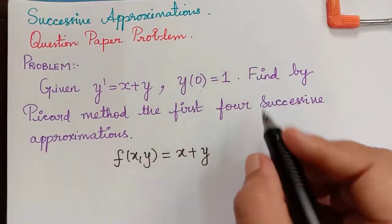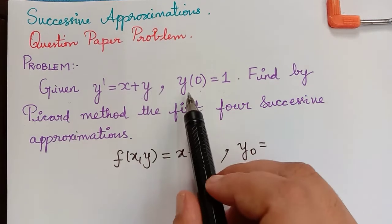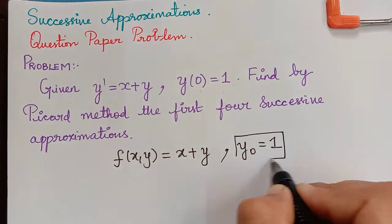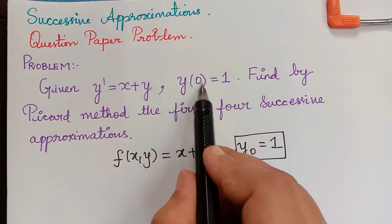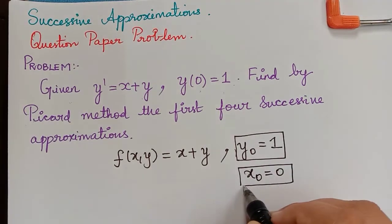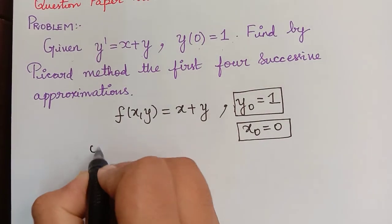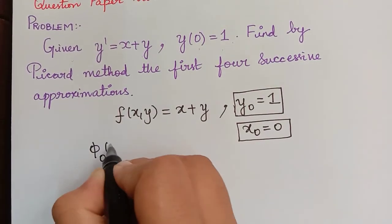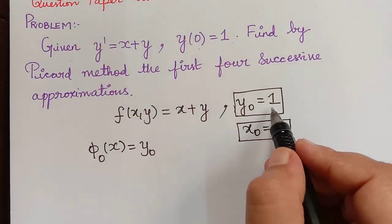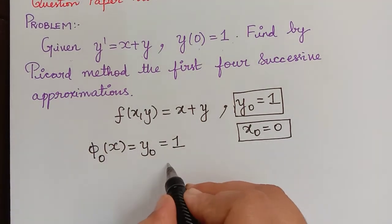Using the initial condition, y₀ = y(0) = 1, so y₀ = 1, and x₀ = 0. Now we have to find the approximations. The first approximation φ₀(x) is equal to y₀, and since y₀ = 1, the first approximation φ₀(x) = 1.